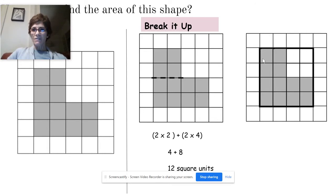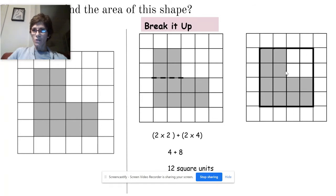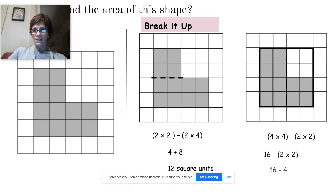Or we can make it bigger. We pretend that instead of the shaded L shape, we have a big 4 by 4 square. We pretend that we have a 4 by 4 square and then we subtract the area of the little white square, which is 2 by 2. So we have 4 times 4, then subtract 2 times 2. 4 times 4 is 16, minus 2 times 2 which is 4. 16 minus 4 is 12 square units.